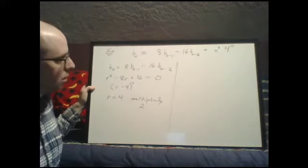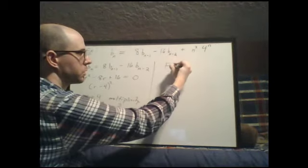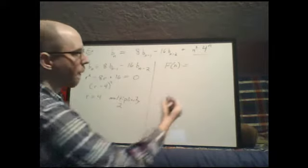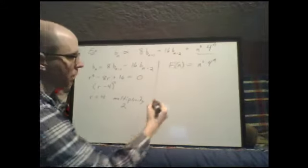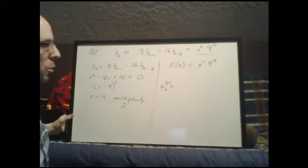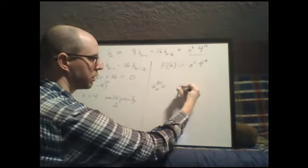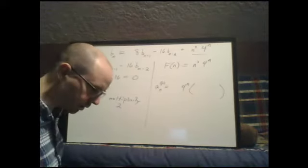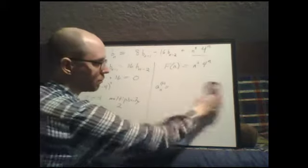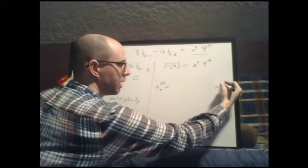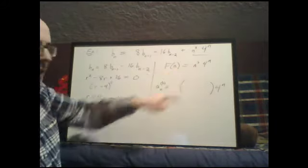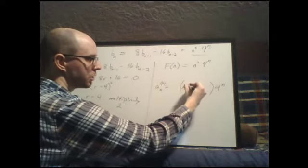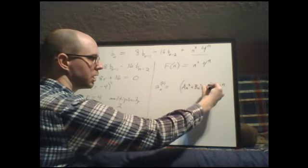For the particular solution, the non-homogeneity is a degree-3 polynomial times a power of 4. Since 4 is our root we must keep that in mind, but first we match the form: 4 to the n times a degree-3 polynomial a·n³ plus b·n² plus c·n plus d.